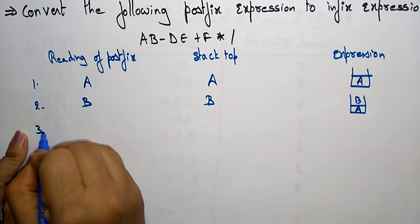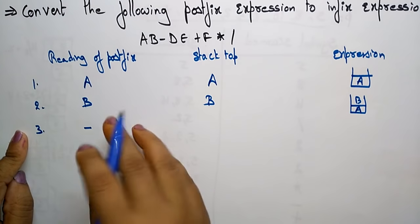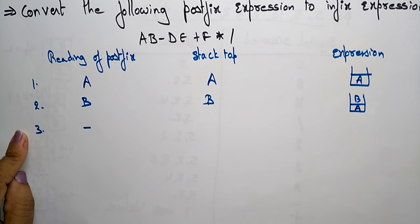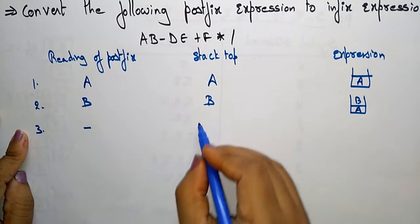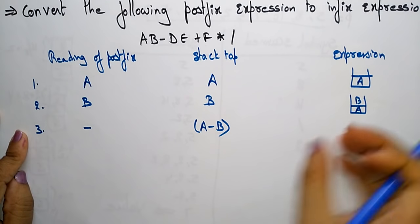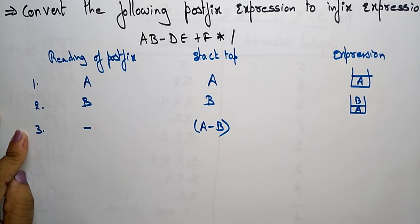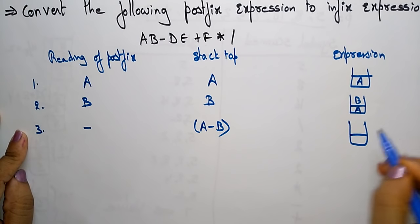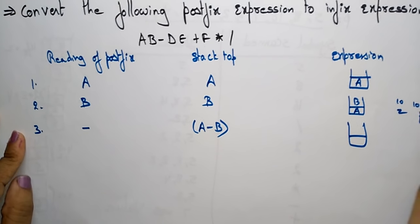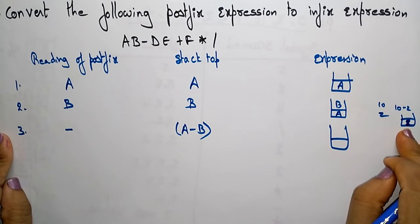The third element is an operator. Whenever an operator is read, we pop the top two elements from the stack according to our algorithm. So we pop A and B and perform A minus B, placing the result on the top of the stack. For example, if the values were 10 and 2, we'd pop them, compute 10 minus 2, and store 8 on the stack top.